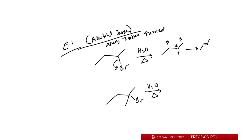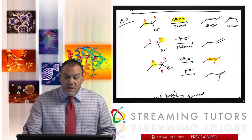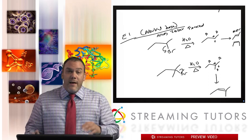For E2 you have to be sensitive to the base — a big bulky base gives Hoffman (anti-Zaitsev) — but for E1 it's always Zaitsev. The alkene formed is the Zaitsev product, and you could also make the cis isomer, but trans is the major product. For the tertiary example, once the carbocation forms you always get the Zaitsev alkene as the major product. None of this is new — it's all review.